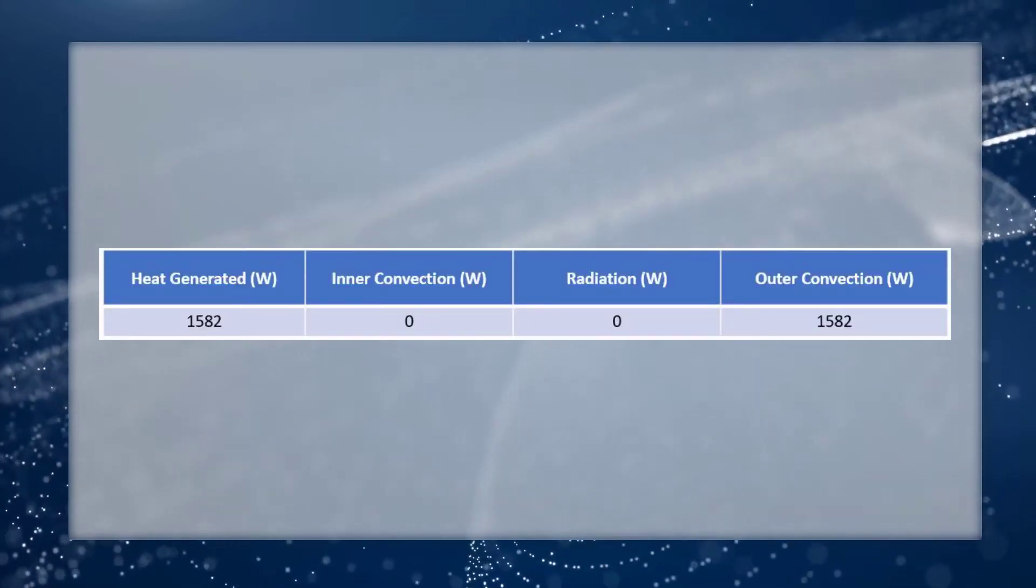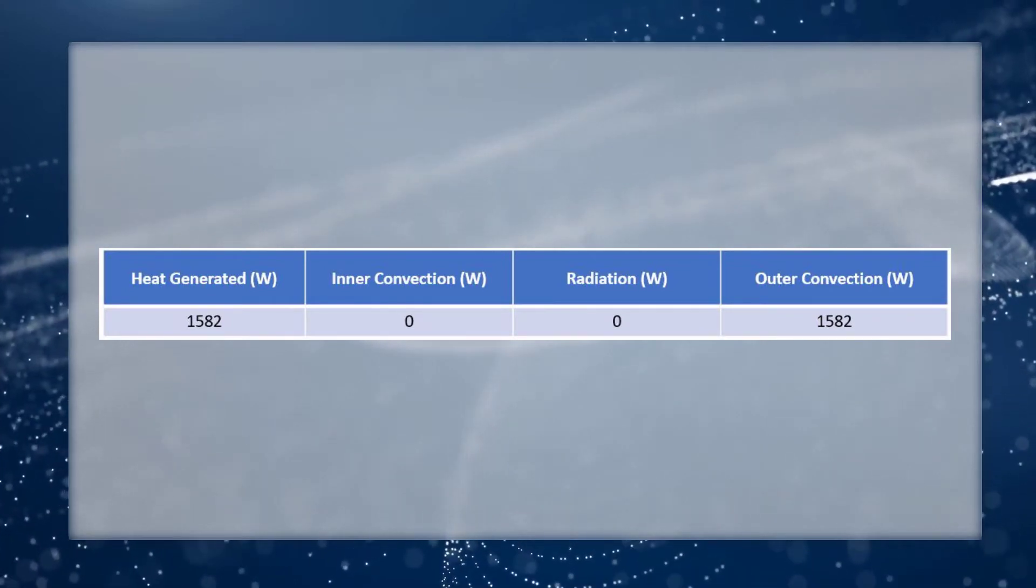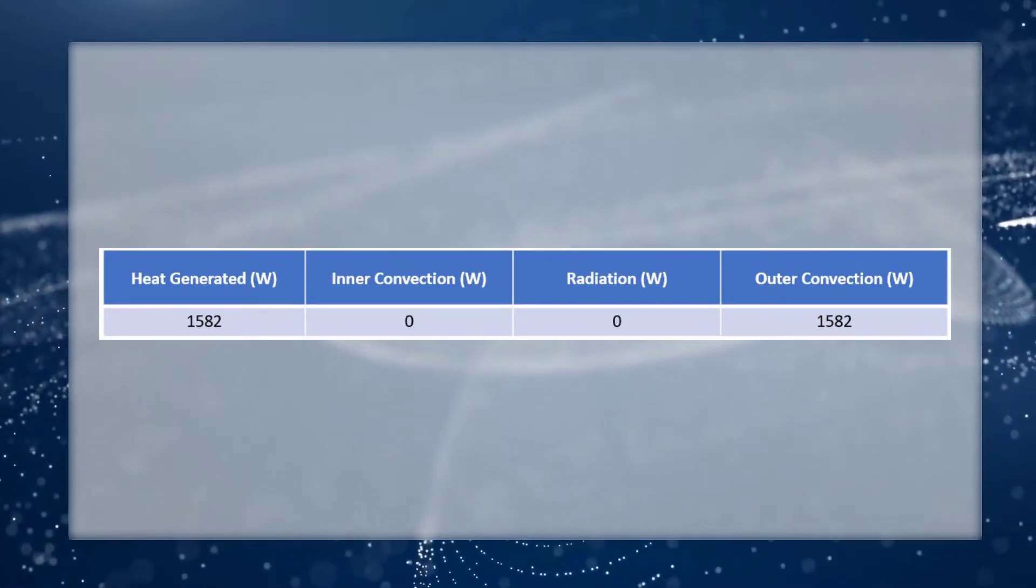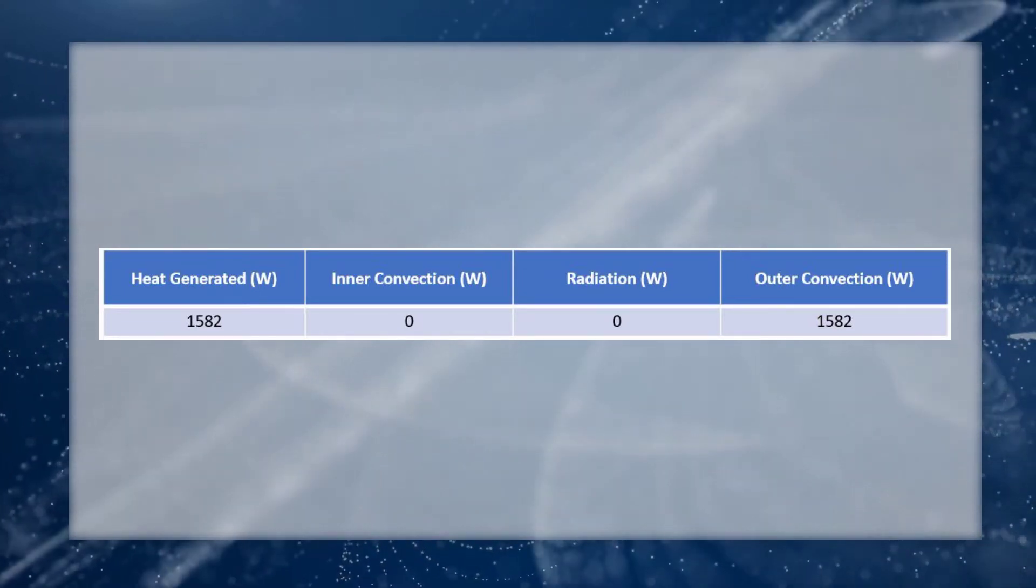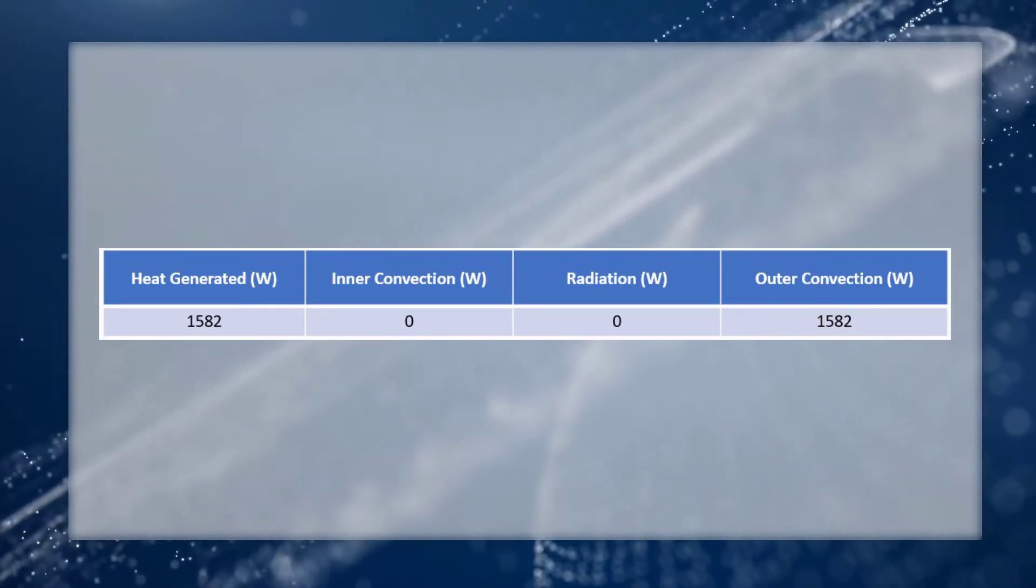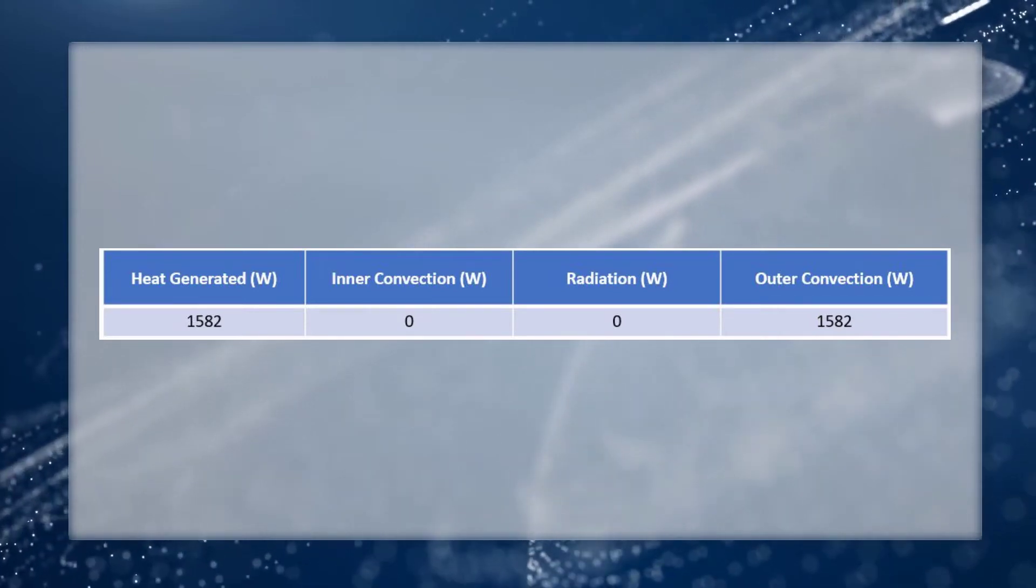Multiplying the meshed volume and the internal heat generation, we get a value of 1582 watts, which is the same as the heat dissipated by the outer convection. The radiation and the internal convection does not add or remove heat to the oven.